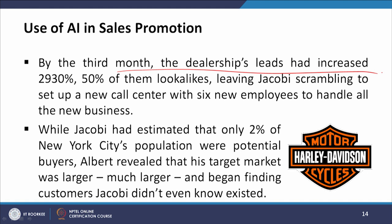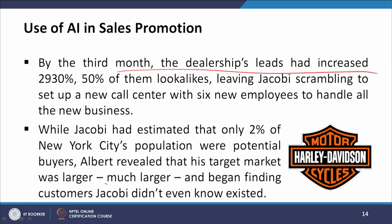While Jacobi had estimated that only 2 percent of New York City's population were potential buyers, Albert revealed that his target market was much larger and began finding customers Jacobi did not even know existed.